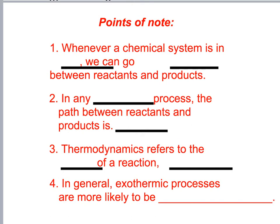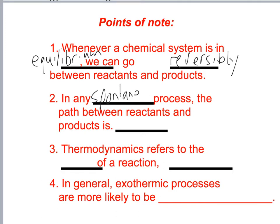Whenever a chemical system is in equilibrium, we can go reversibly between reactants and products. But in any spontaneous process, the path between reactants and products is irreversible.